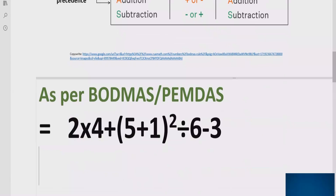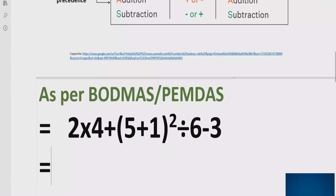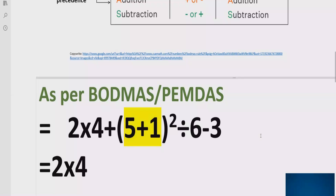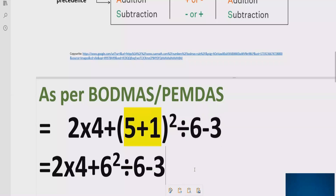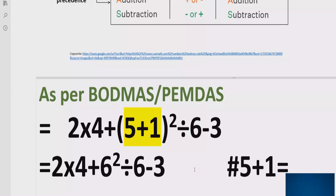As you can see, we will apply the BODMAS and PEMDAS rules. First we solve the bracket. We have 2 multiplied by 4, plus the bracket (5 plus 1) equals 6, raised to power 2, divided by 6 minus 3. The reference here is: 5 plus 1 equals 6.